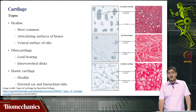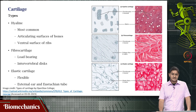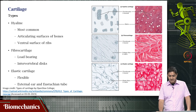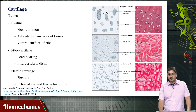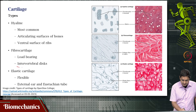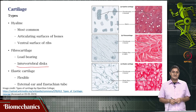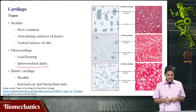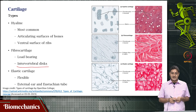Then you have fibrous cartilage — cartilage that is more fibrous than the other types. This is called fibrocartilage. These have a crucial role in load bearing. Importantly, they are present and found in intervertebral discs, where they perform the important function of load bearing.